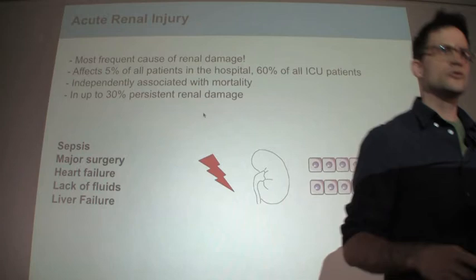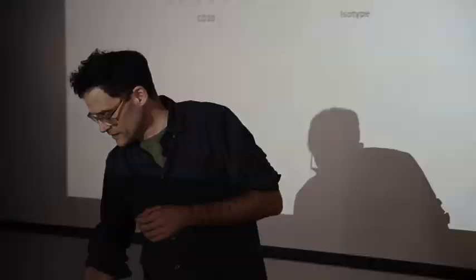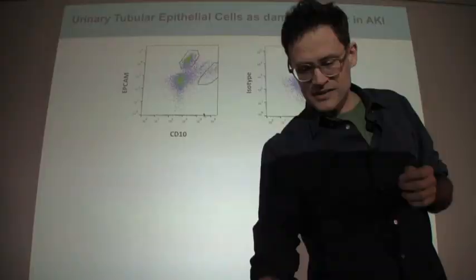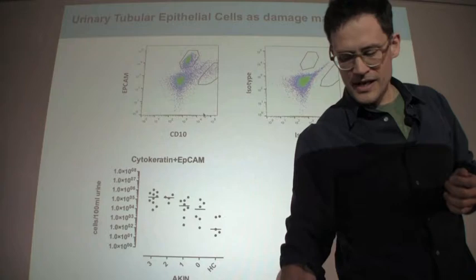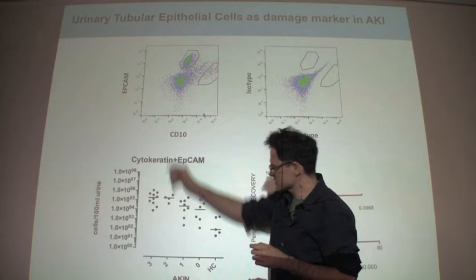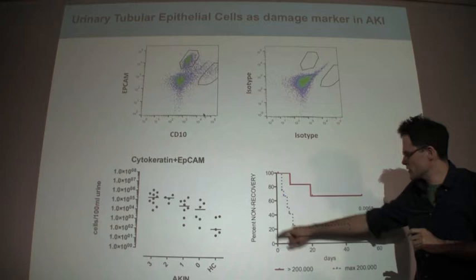We developed a biomarker for this by counting tubular epithelial cells in the urine using flow cytometry. If we count these cells, we see that with increasing damage there are more tubular epithelial cells in the urine. And even more importantly, if you compare patients with more cells versus fewer cells — independently of the stage of their kidney failure — having fewer cells is better. This is a measure of non-recovery: if you have fewer cells you will recover your kidney function, and if you have more cells you are less likely to do so.